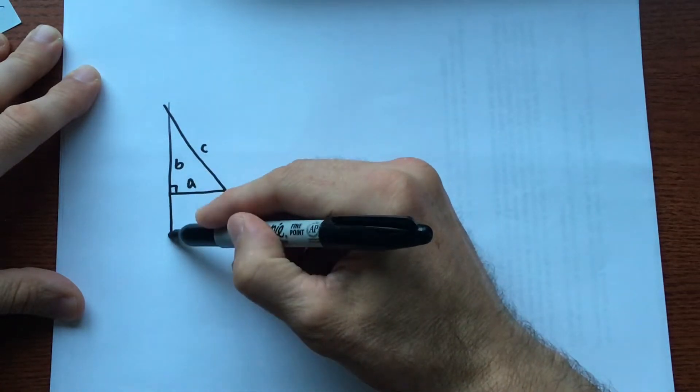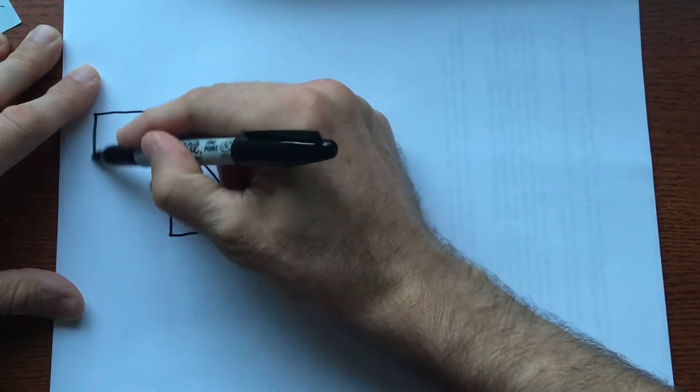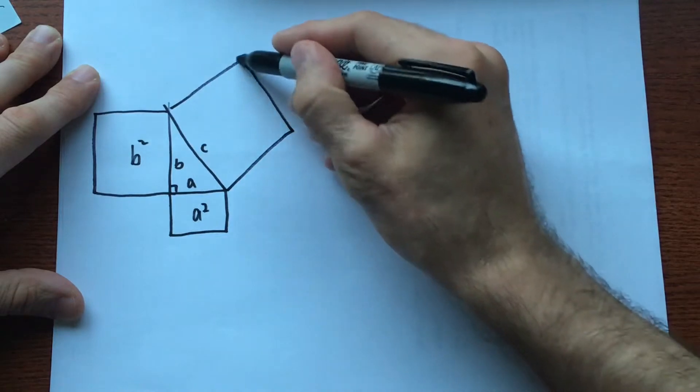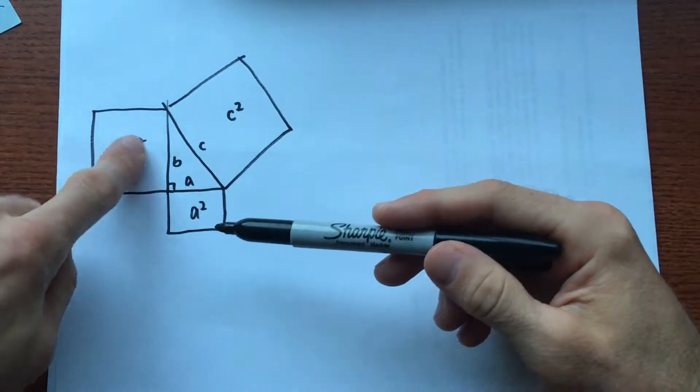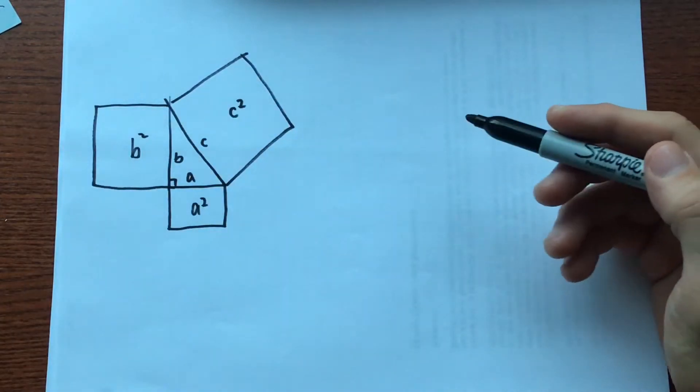So we want to show that a squared, which is the area of this square, plus b squared, which is the area of this square, is equal to c squared, which is the area of this square. So if we could somehow make it obvious that the area of this square plus the area of this square could cover that square, that would show it.